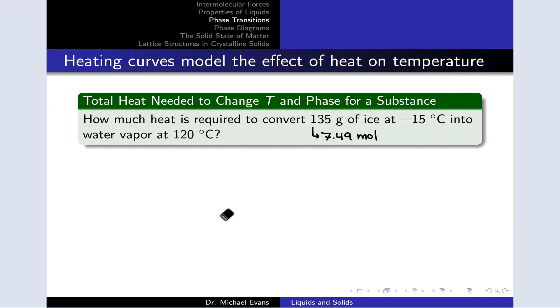So, for example, thinking about a heating curve for a problem like this is going to be very useful. The question is, how much heat is required to convert 135 grams of ice at negative 15 degrees C into water vapor at 120 degrees C? And I've gone ahead and just calculated the number of moles of ice we're dealing with here, 7.49 moles. Now, why is a heating curve useful to think about here? Well, we know we're going through phase transitions. Knowing that water melts at zero degrees C and boils at 100 degrees C shows us that we're going through both the solid to liquid phase transition at zero and the liquid to gas phase transition at 100 degrees C.